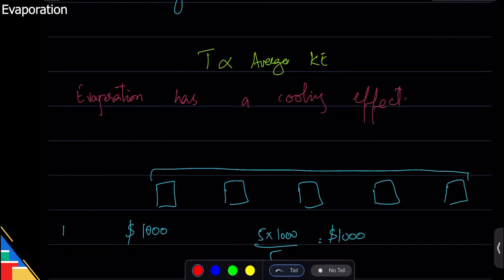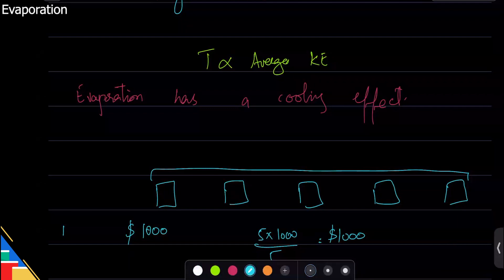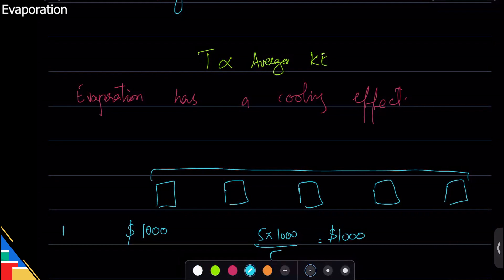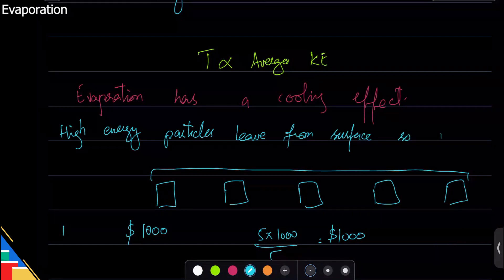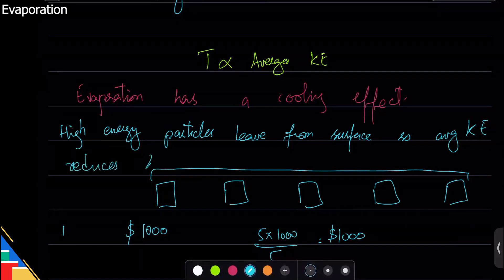When we sweat, the particles that evaporate are the ones with high kinetic energy. When they go away, the average kinetic energy goes down, which means temperature goes down — and that's why we see a cooling effect. So evaporation means high-energy particles leave from the surface, average kinetic energy reduces, and temperature lowers. That's it — and it's very, very important.